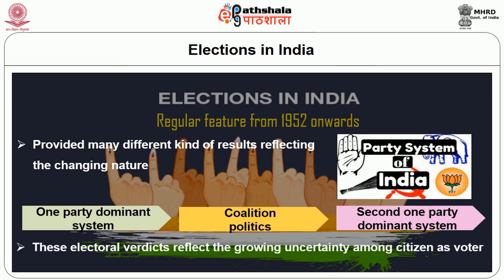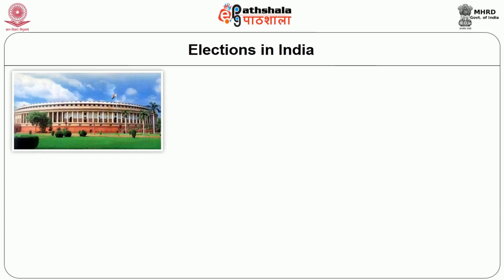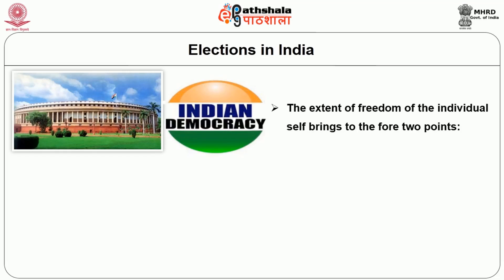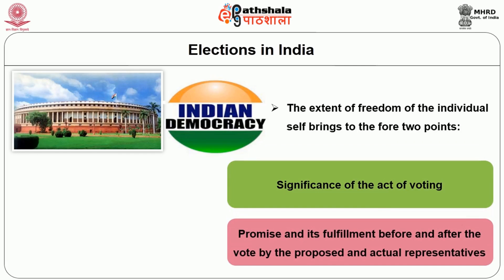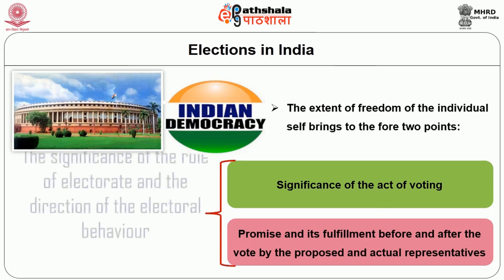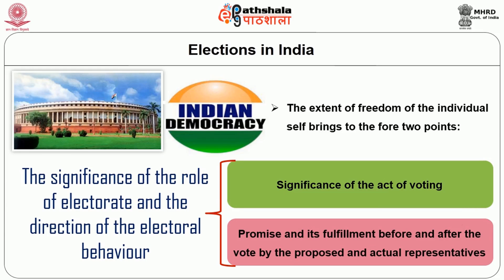These electoral verdicts reflect the growing uncertainty among citizens as voters regarding a perfect political system in India. In the analysis of Indian parliamentary representative democracy, two key points emerge: the significance of the act of voting, and the promise and its fulfilment before and after the vote by proposed and actual representatives. These two points underscore the significance of the role of the electorate — a conscious person who takes part in directly electing their representative.